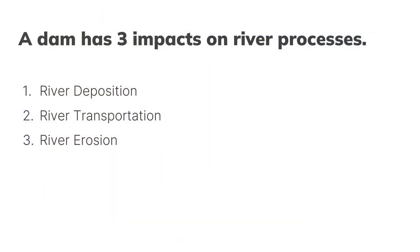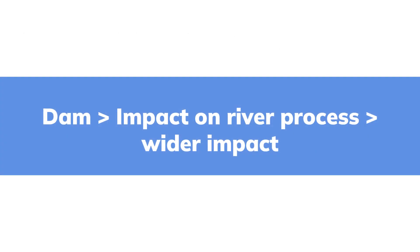A dam has three impacts on river processes: deposition, transportation, and erosion — which are, spoiler, the three processes that rivers have anyway. We're going to look at all three of them, not necessarily in that order, but each of them is going to be a little bit different. The first one I'm going to look at with you is river transportation.